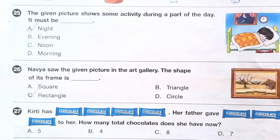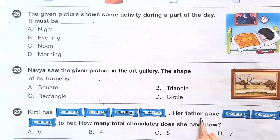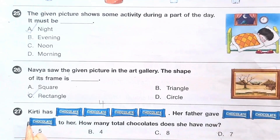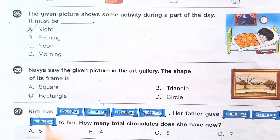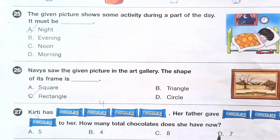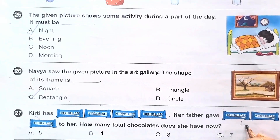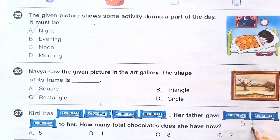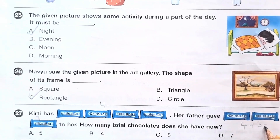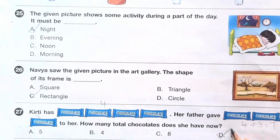Question number 27: Riti has 4 chocolates. Her father gave 3 chocolates to her. How many total chocolates does she have now? Total means 4 plus 3, which equals 7. The answer is option D.